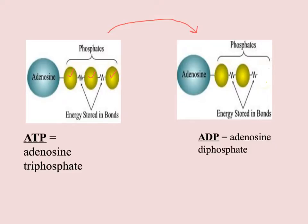To release energy — to run a race, write with your pencil, talk with friends, or play a game on your cell phone — you turn ATP into ADP. The only difference is ATP had three phosphates and ADP has two. When the third phosphate gets plucked off from ATP, energy is released.